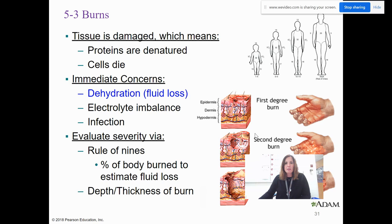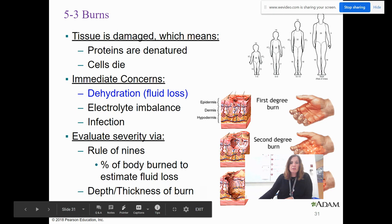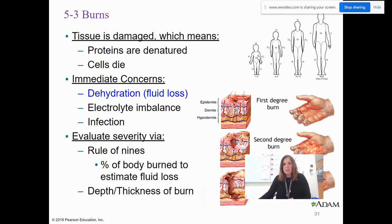A second degree burn goes into the dermis, and a third degree burn goes into the dermis and even into the hypodermis level. The rule of nines varies based on age, because the relative body surface area of an individual changes as they grow. The numbers adjust because the size of the individual increases — essentially measuring what percentage of the body is burned.